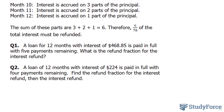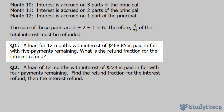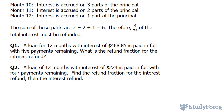The first question reads: a loan for 12 months with interest of $468.85 is paid in full with 5 payments remaining. What is the refund fraction for the interest refund? Now let's think about this clearly. If there are 5 payments remaining on a 12-month cycle, that means everything was paid within 7 months of the loan. So we still have months 8, 9, 10, 11, and 12 — which makes 5 months left.